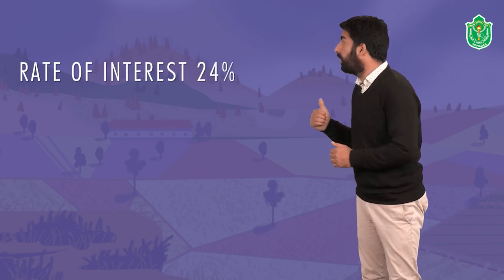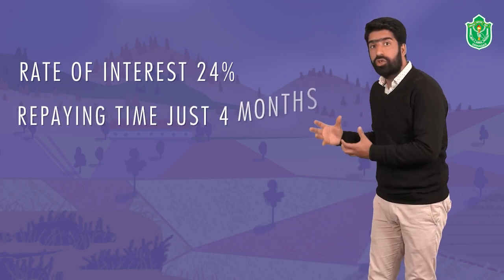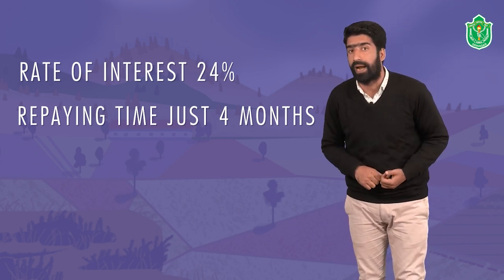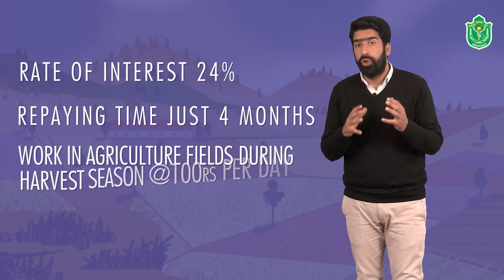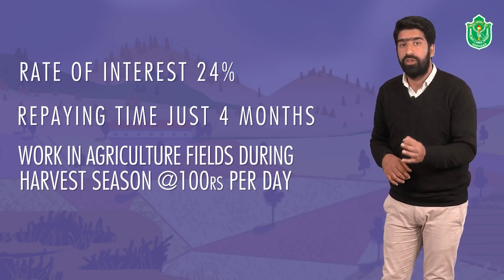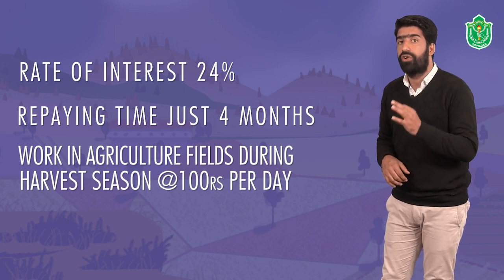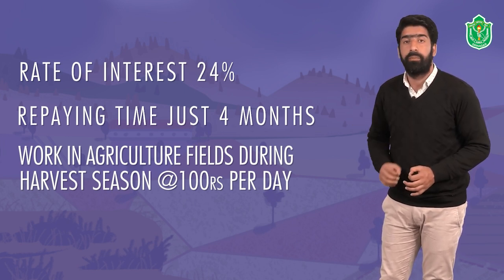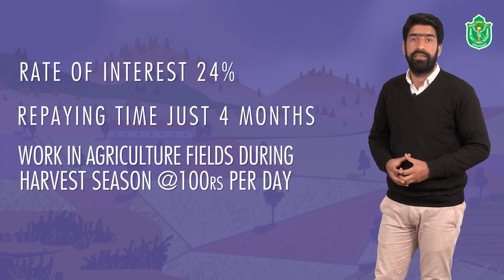The conditions set by Tejpal Singh are: condition one — the rate of interest will be 24%; condition two — the repayment time will be just four months; condition three — she must work on his agricultural field during the harvest season at the rate of 100 rupees per day, which is less than the minimum wage. Once she agrees to these three conditions, Tejpal Singh will give her the loan. She has no choice. The high interest rate and very short repayment time mean she will always be under stress in repaying this loan — this is the condition of small farmers.